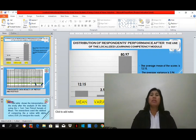While the distribution of respondents' performance after the use of the localized learning competency module are the following: the average mean of the scores is 12.15, the average variance is 3.94, and the mean percentage score is 80.97.